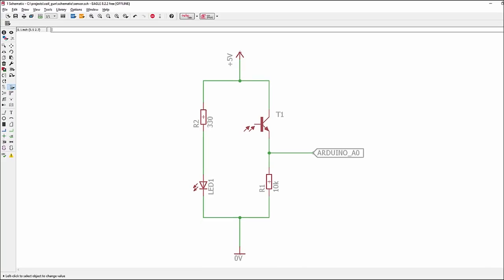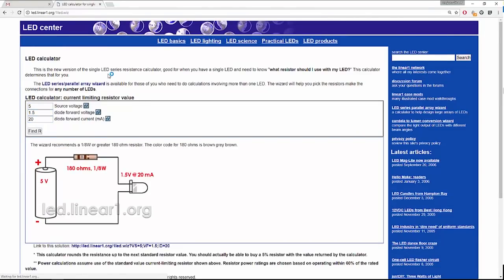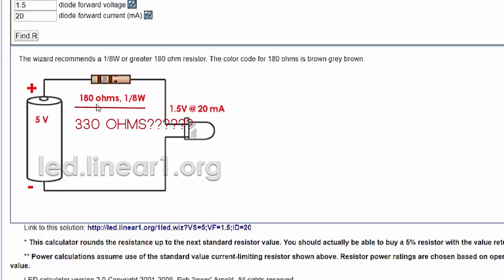And for the LED, I am going with a 330 ohm resistor, which is fine for 5 volts. But if you are not sure, you can always use one of those calculators for that.